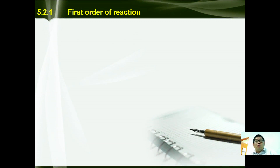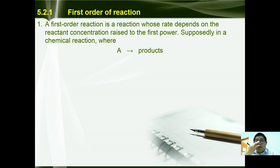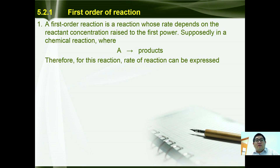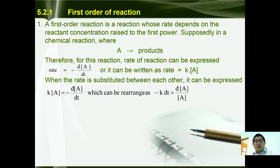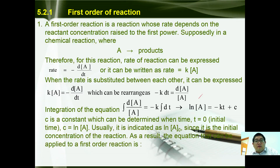A first order reaction is a reaction whose rate depends on the reactant concentration raised to the first power. Suppose a chemical reaction where A gives products. The rate of reaction can be expressed as rate equals negative d[A]/dt, or based on the rate equation, rate equals k[A]. Combining these equations: k[A] equals negative d[A]/dt, which can be rearranged as negative k dt equals d[A] over [A].